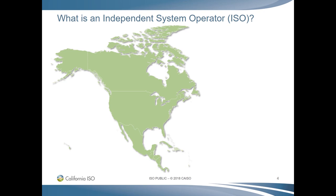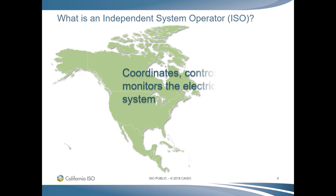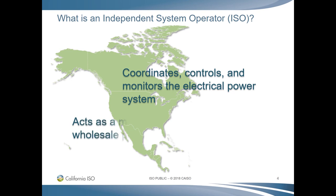What does ISO mean? In North America, an Independent System Operator, or ISO, is a federally regulated regional organization which coordinates, controls, and monitors the operation of the high-voltage electric power system. It also acts as a commodity marketplace for wholesale power. Similar to a stock exchange, an ISO never actually owns or takes title to the energy that is bought and sold. The marketplace acts only as the platform to bring buyers and sellers of energy and energy services together.